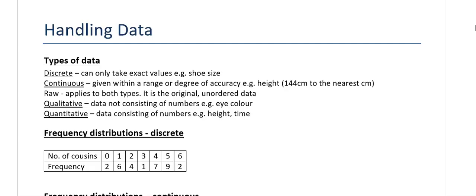The two main types of data are discrete data, which can only take exact values — for example shoe size, which could be 5, 6, 7, 8, 9, 10. Continuous data, however, is data given within a range or degree of accuracy. For example, height measured as 144 centimeters to the nearest centimeter has been rounded. I always think of continuous data as things like height, length, speed, and time.